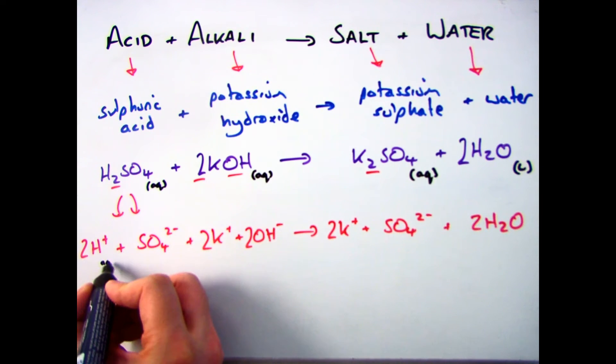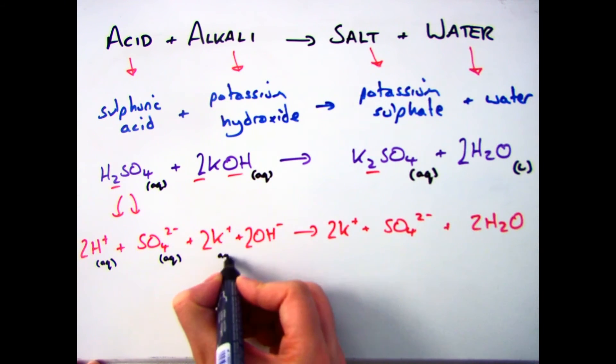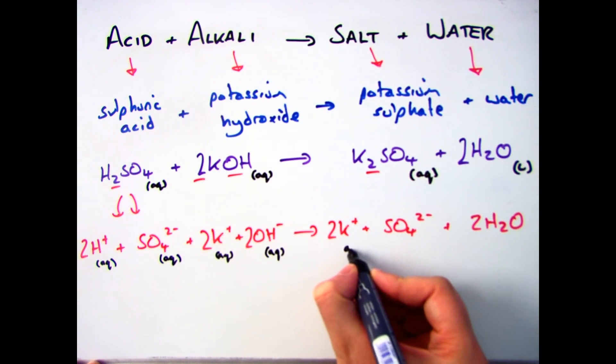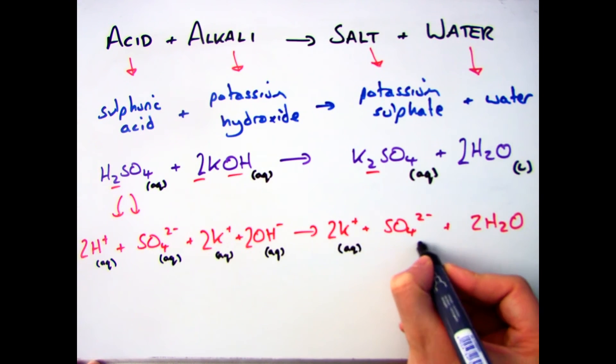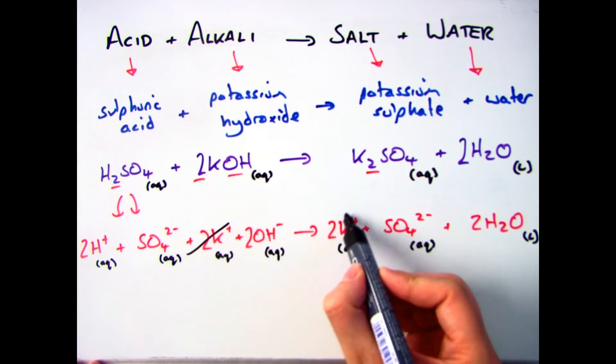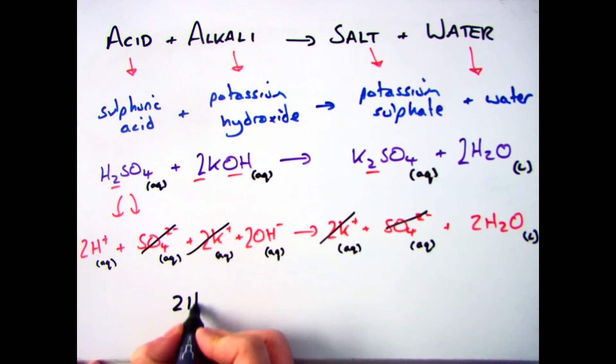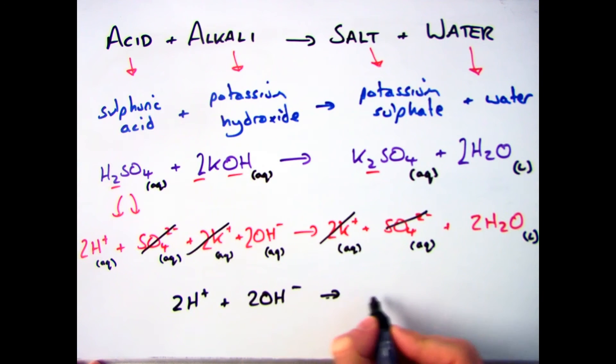It's important to put in the state symbols. So aqueous for all of the ones that have got a charge on them, and then liquid for your water at the end. Once you've done that, you can cross off the things that are identical on either side. Which in this case, I have two Ks, two potassium ions, and I have my sulfate ions. So I can cross those out. I'm left with two H plus plus two OH minus forms two water molecules. Now because all those numbers are the same, I can get rid of them.